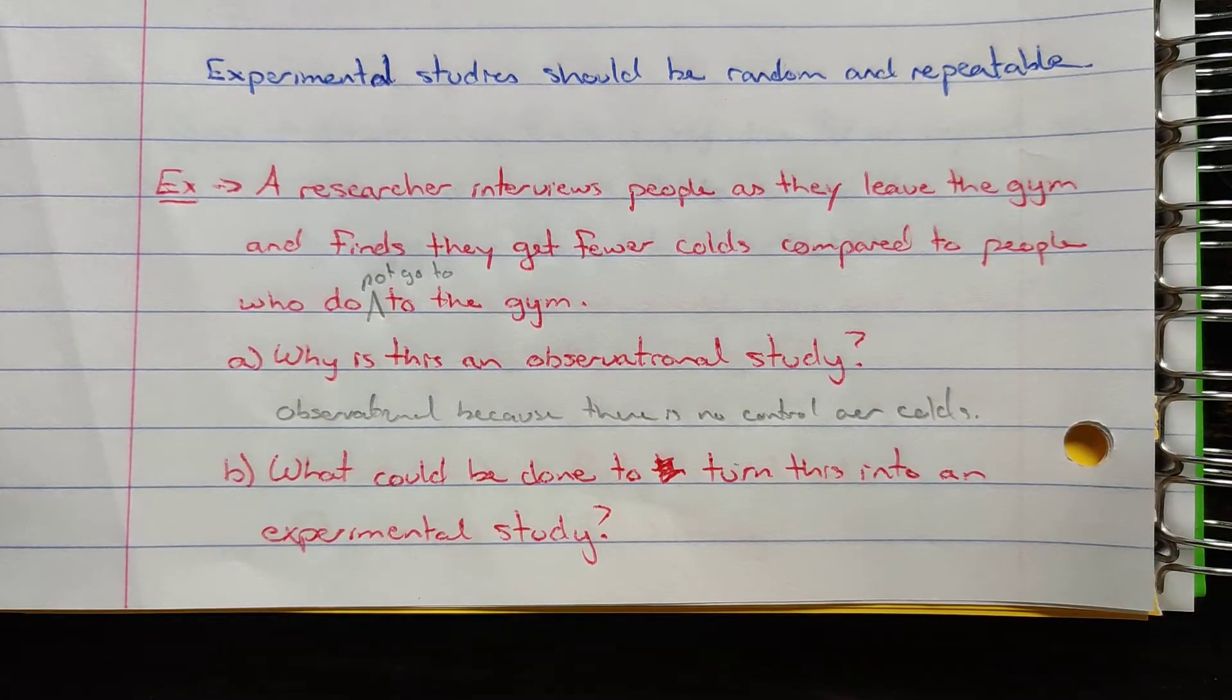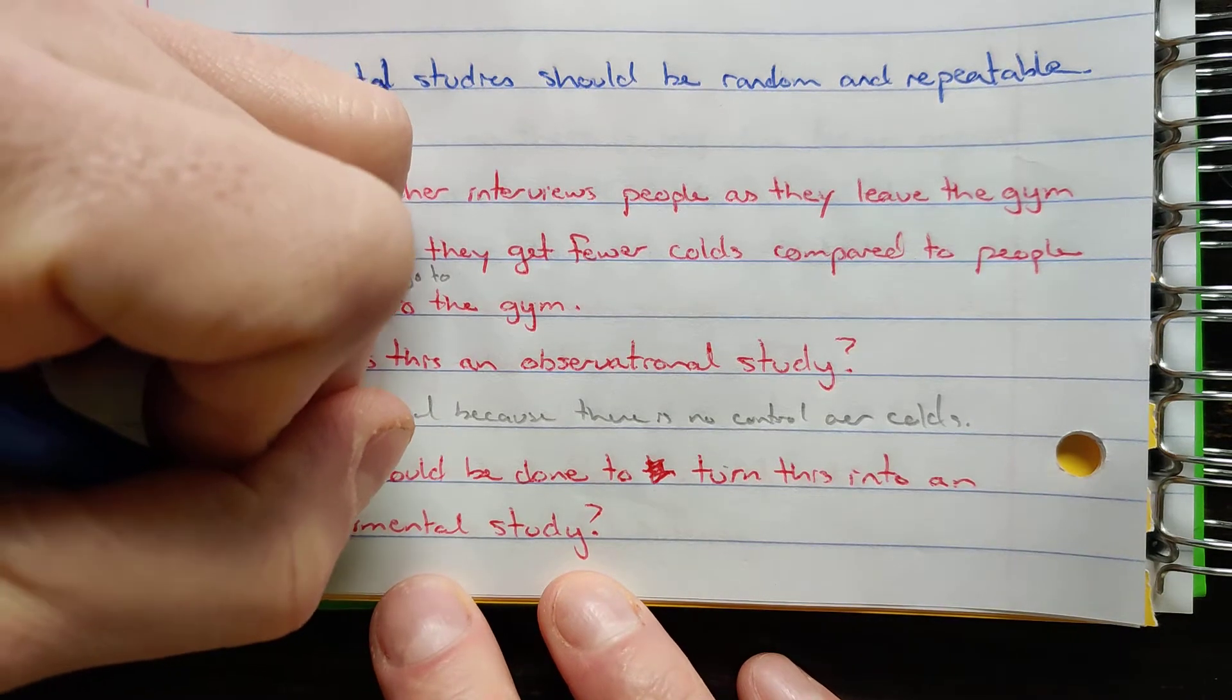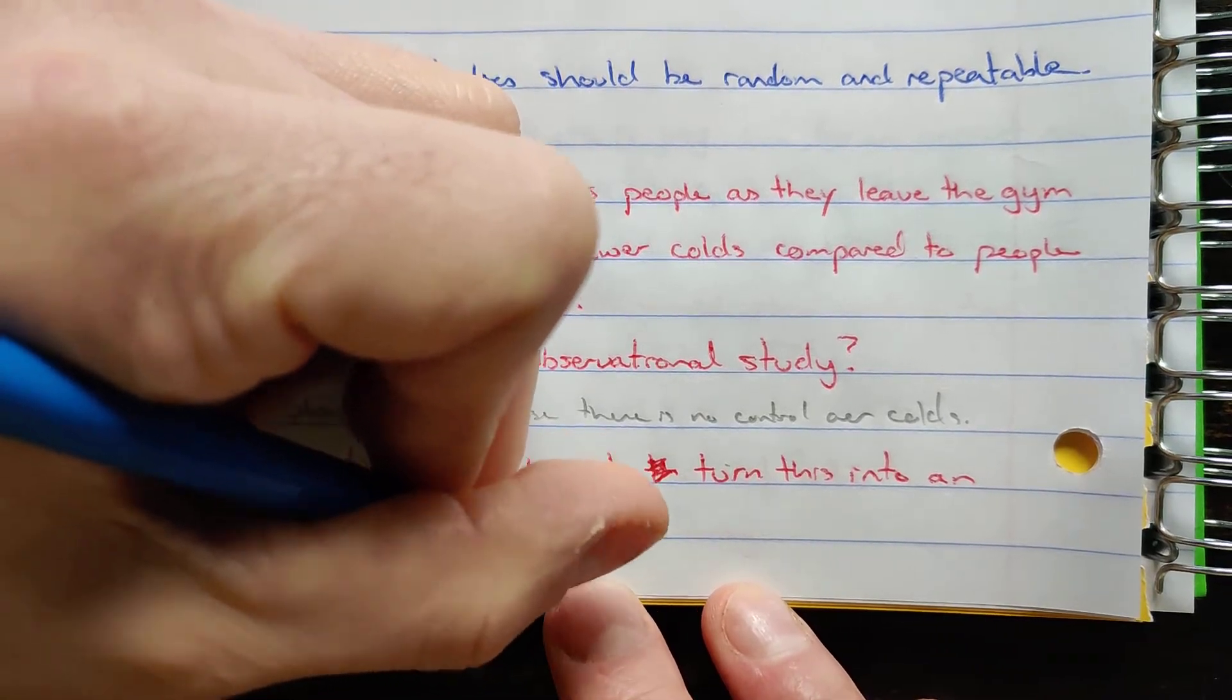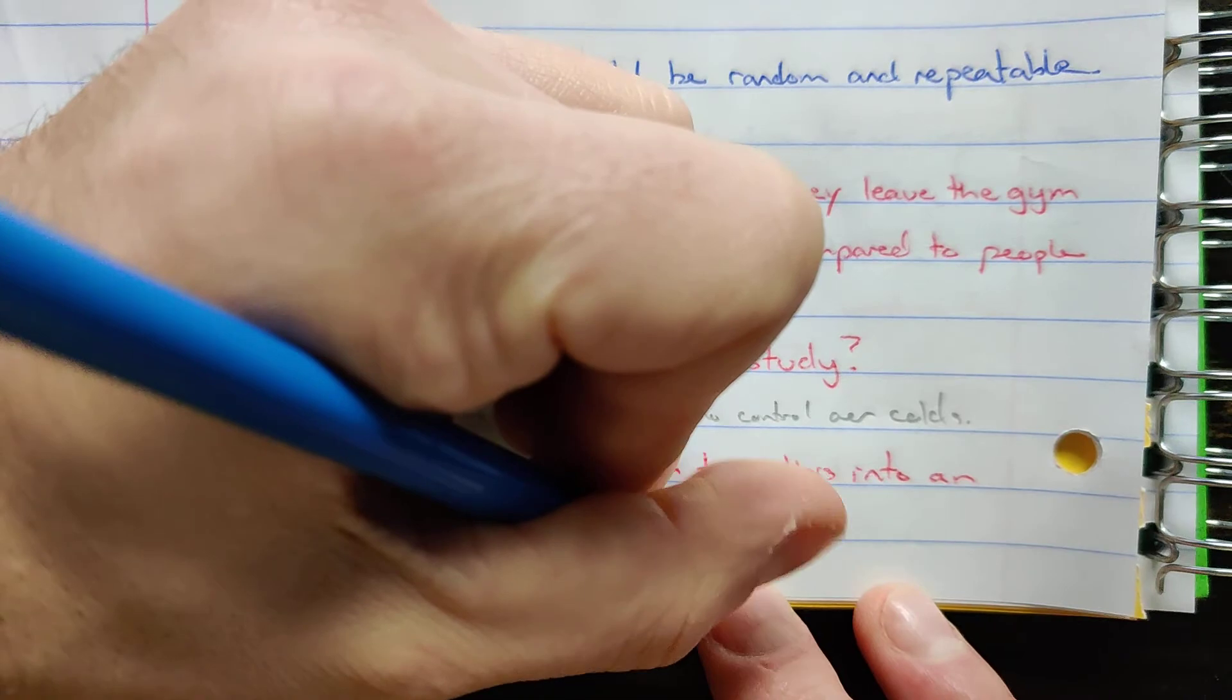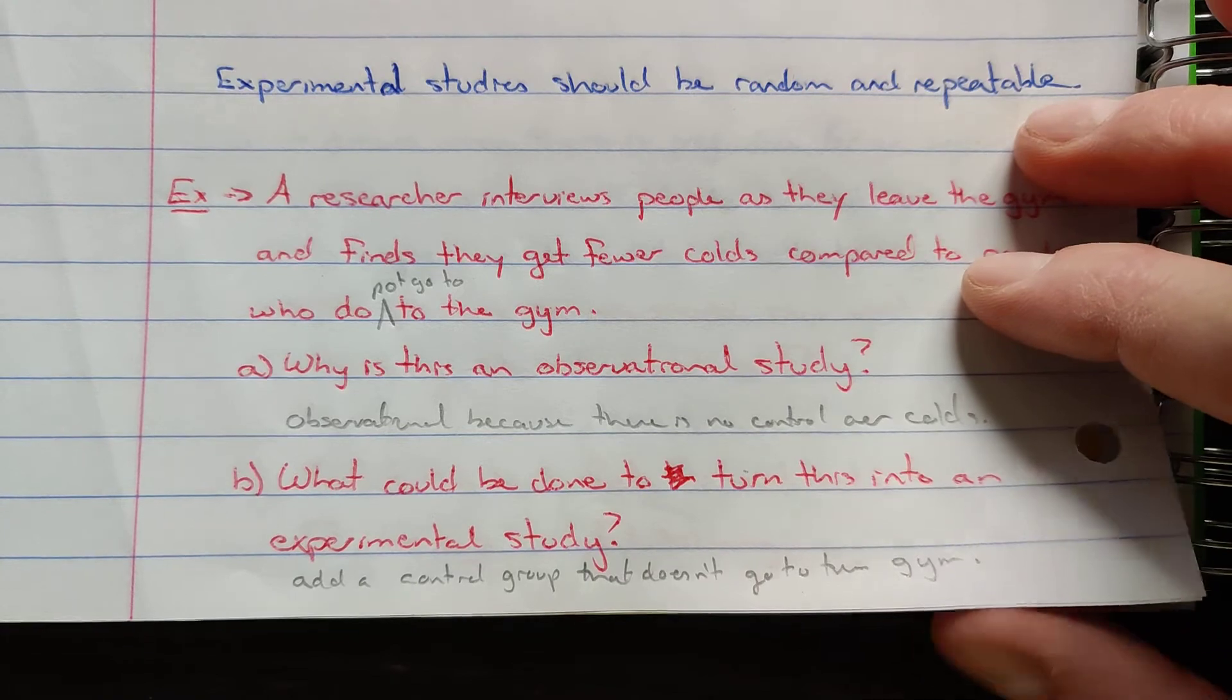What can be done to turn this study into an experimental study? Well, we need to get some sort of control group, so perhaps we could include people not just going to the gym but people that don't go to the gym as part of the study so we can use that as a control. So simply that could turn this from an observational to experimental study.